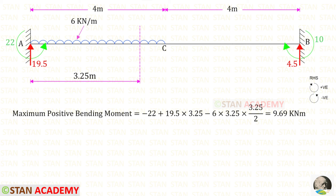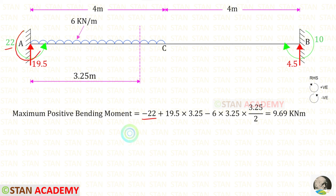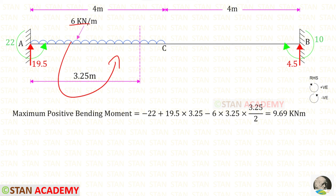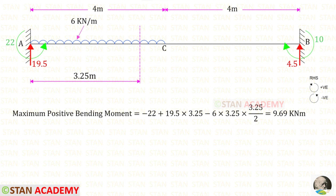Now let us find the maximum positive bending moment at x equal to 3.25 meters. Ma acts anti-clockwise (negative), the vertical reaction Ra acts clockwise over distance 3.25 (positive), and the UDL acts anti-clockwise (negative) with the distance multiplied by distance over 2. Finally the maximum positive bending moment is 9.69 kNm.